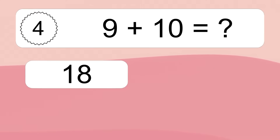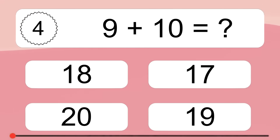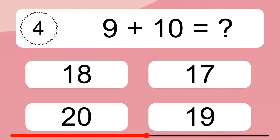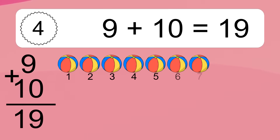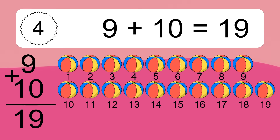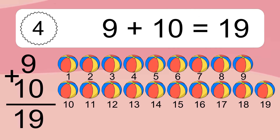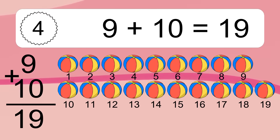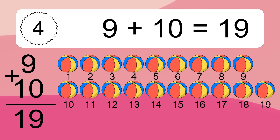9 plus 10 equals what? Let's count it: 1, 2, 3, 4, 5, 6, 7, 8, 9, 10, 11, 12, 13, 14, 15, 16, 17, 18, 19.